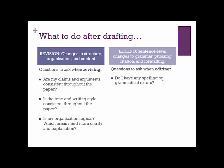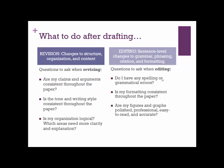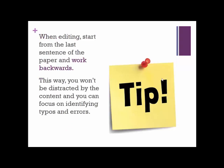When you're done with revision, do some editing — that's sentence-level changes: identifying grammar mistakes, typos, issues with citation, and formatting inconsistencies. Questions to ask when editing include: Do I have any spelling or grammatical errors? Is formatting consistent throughout my paper? Are my headings consistent? Are my figures and graphs polished, professional, easy to read, and accurate? Is my paper free of typos and citation errors? Typos can really diminish your credibility as a writer. I recommend when editing to start from the last sentence of your paper and work backwards to help you focus on little mistakes rather than overall argument. It also often helps to read aloud — you often find mistakes that you don't find otherwise.